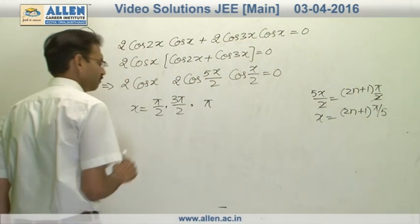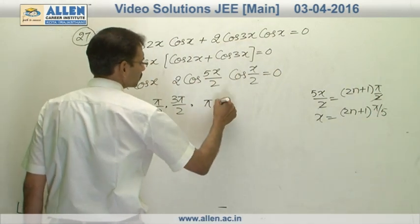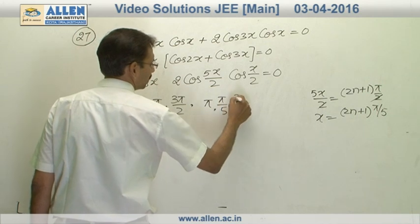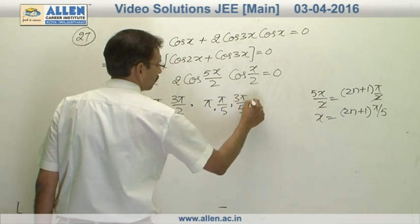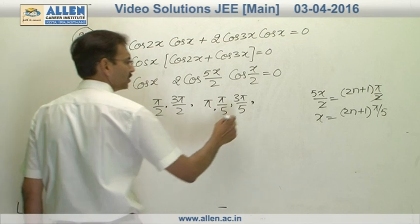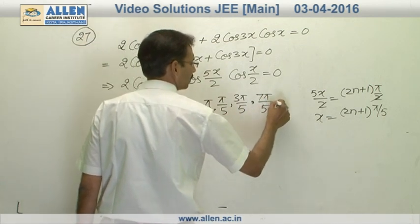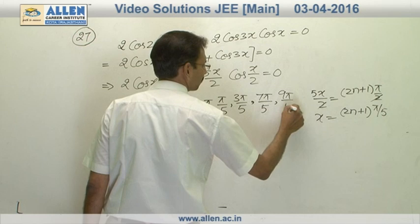Now just count them. The first one is π by 5 and 3π by 5. 5π by 5 already considered. Then 7π by 5 and 9π by 5.